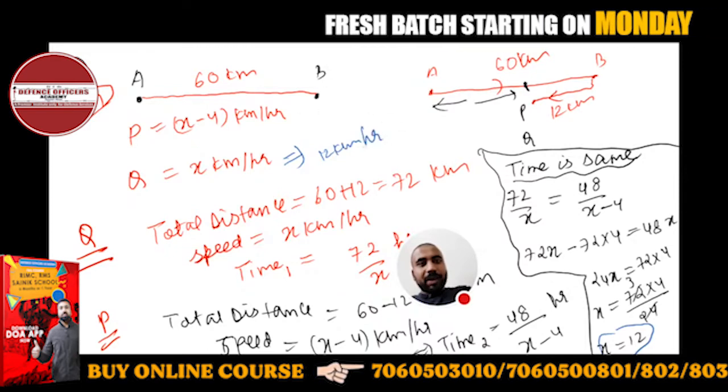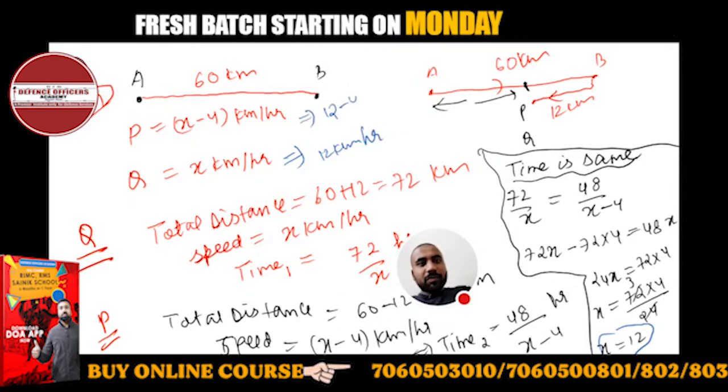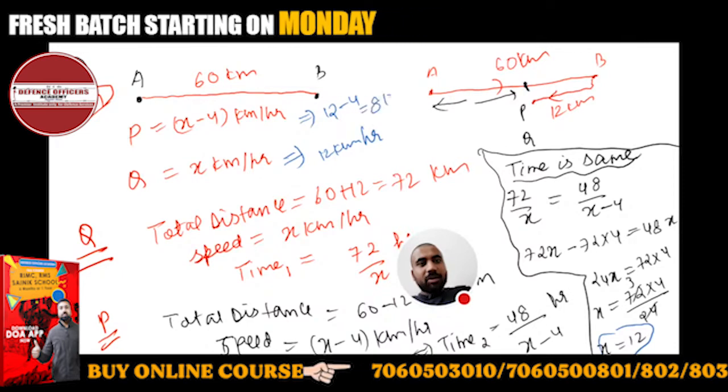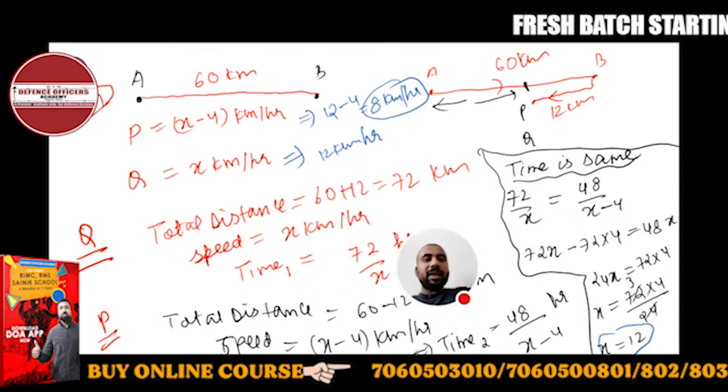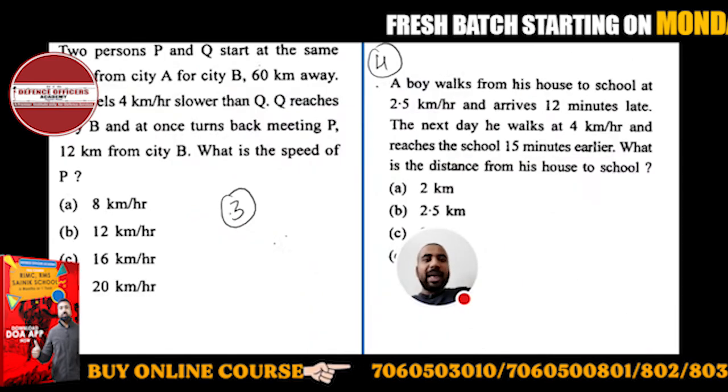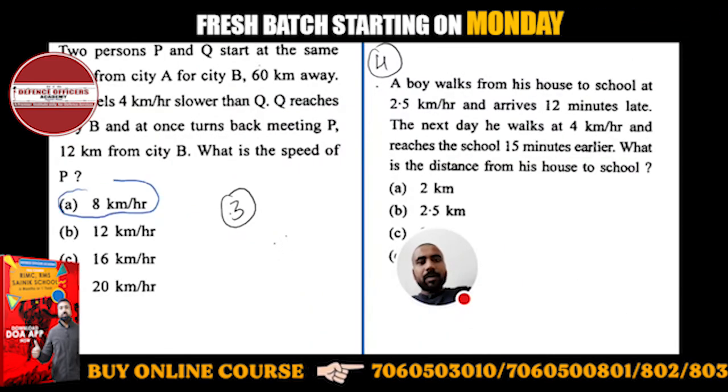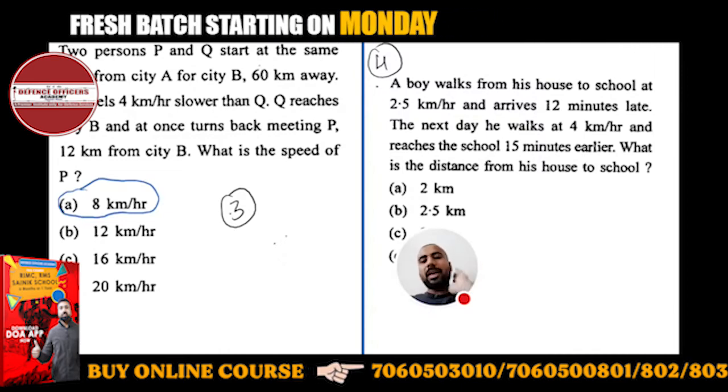P's speed is 12 minus 4, which is 8 km per hour. So the speed of P will be 8 km per hour. 8 km per hour will be the right answer.